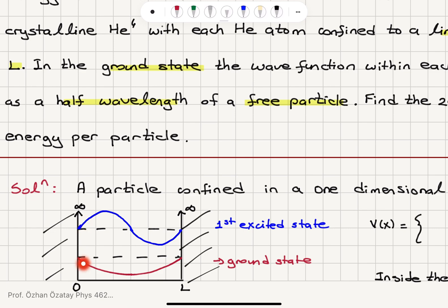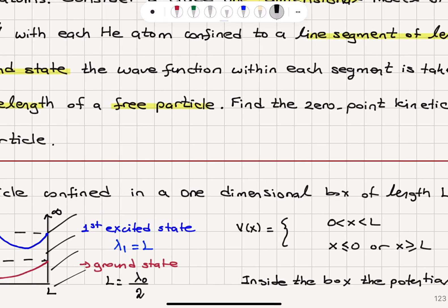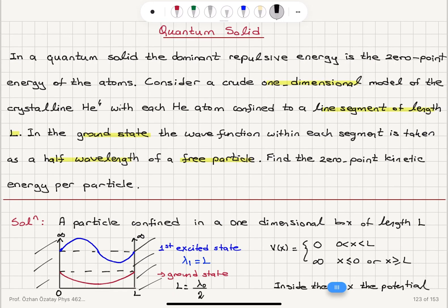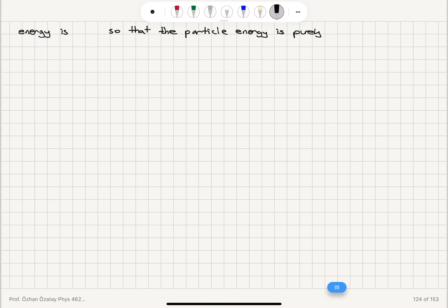If you look at this situation, the ground state corresponds to half a wavelength, so L equals lambda_0 over 2. The first excited state will have three nodes — the ground state has two nodes — and will have a full wavelength, so lambda_1 equals L. This continues, with an infinite potential barrier at 0 and L. Inside the box, the potential is 0; outside the box, it is infinite.